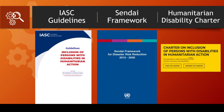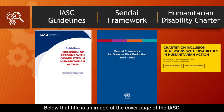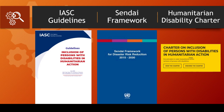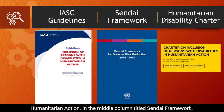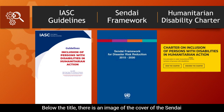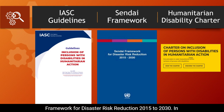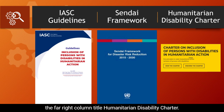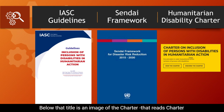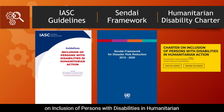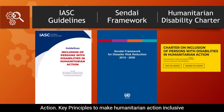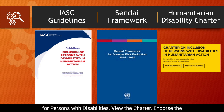This slide has three columns. The first column reads IASC Guidelines, with an image of the cover page of the IASC Guidelines on Inclusion of Persons with Disabilities in Humanitarian Action. The middle column is titled Sendai Framework, showing an image of the cover of the Sendai Framework for Disaster Risk Reduction 2015–2030. The far right column is titled Humanitarian Disability Charter, with an image of the Charter on Inclusion of Persons with Disabilities in Humanitarian Action — Key Principles to Make Humanitarian Action Inclusive for Persons with Disabilities — with options to View the Charter and Endorse the Charter.